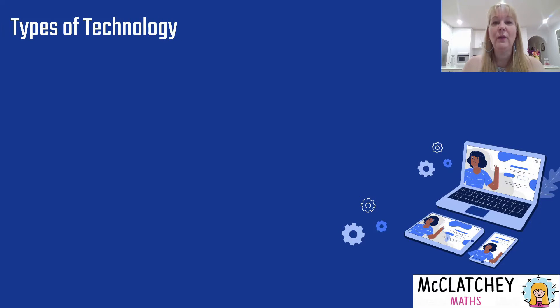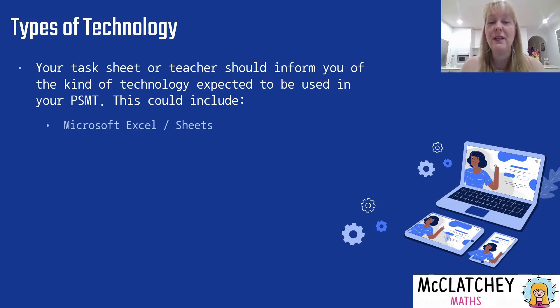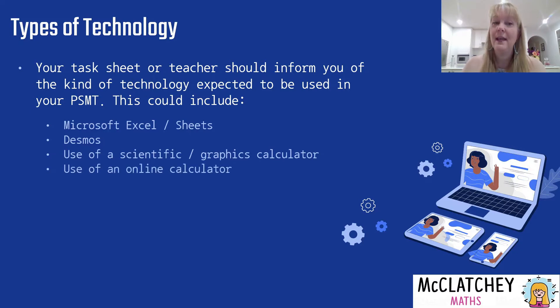Now let's have a quick look at the different types of technology you could be asked to use in your maths assignment. Your task sheet will tell you what's expected of you. This could include things like Microsoft Excel or sheets, Desmos, particularly if you're doing math methods or specialist mathematics. It would also include the use of your scientific or graphics calculator. It could also include the use of an online calculator, and there are many online calculators available to help you check the accuracy of your work and develop your solution.